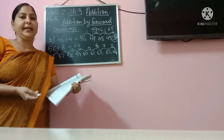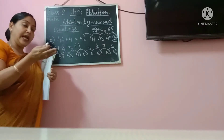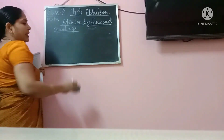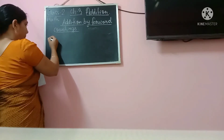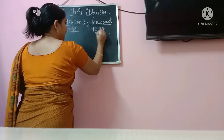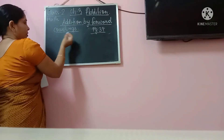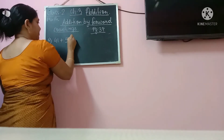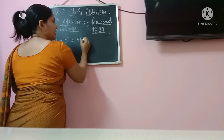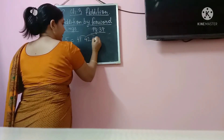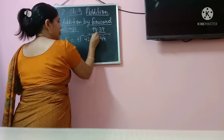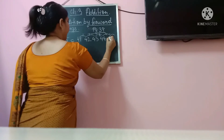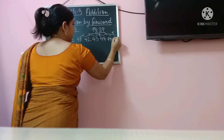Next is 'add by forward counting.' Here you can see direct answers are given, but you will not write direct answers. You will do it as I have explained — in this manner. Don't write direct answers. On page number 39, add by forward counting: the first question is 41 plus 5. So you will start with 41, then next step 42, 43, 44.